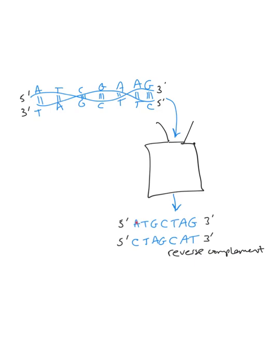For example, the A at one end corresponds to T at the reverse end of the opposite strand. If you took the bottom strand CTAGCAT and flipped it to read the reverse, then took the complement of those bases — ATGCTAG — that sequence matches the top strand.